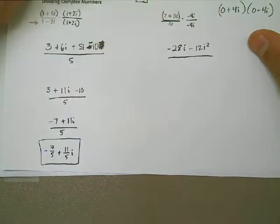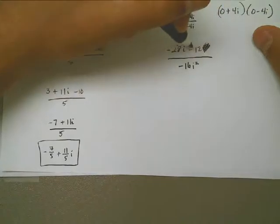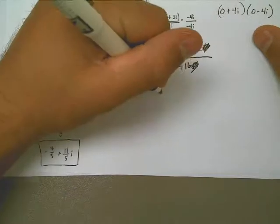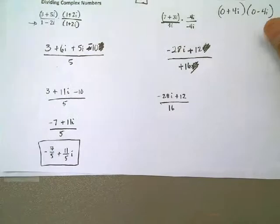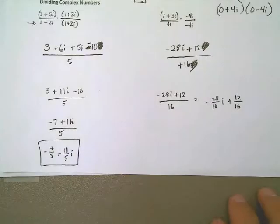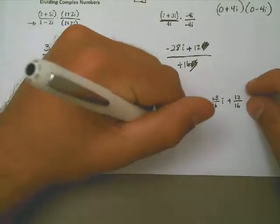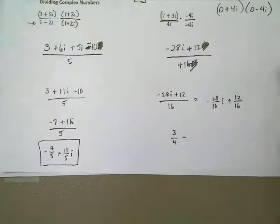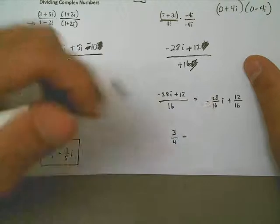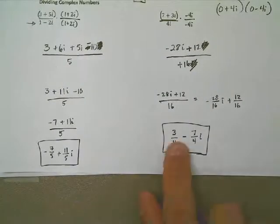As we've learned by now, the i squared just changes the sign of the 12 on top. And it changes the sign of the 16 on bottom. What you really end up with is negative 28i plus 12 all over 16. But we need to write this in the proper format. I'm going to break this into two fractions. Negative 28 over 16i plus 12 over 16. I'm going to reduce those fractions, but remember, the thing with the i always goes last. 12 sixteenths reduces to 3 over 4 minus 28 over 16 reduces down to 7 over 4. And there's my answer. 3 fourths minus 7 fourths i.